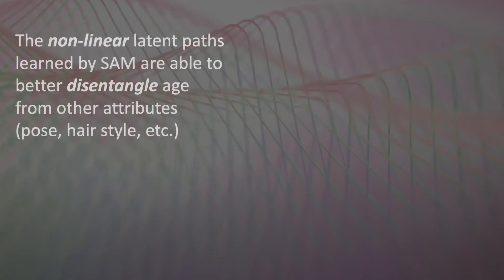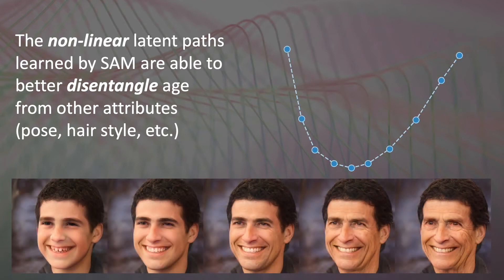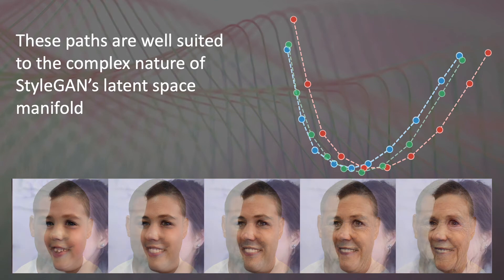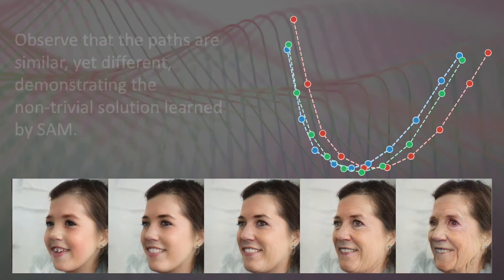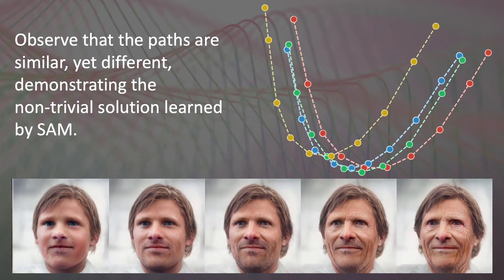The non-linear latent paths learned by SAM are able to better disentangle age from other attributes, such as pose and hairstyle. These paths are well suited to the complex nature of StyleGAN's latent space manifold. Observe that the paths are similar, yet different, demonstrating the non-trivial solution learned by SAM.